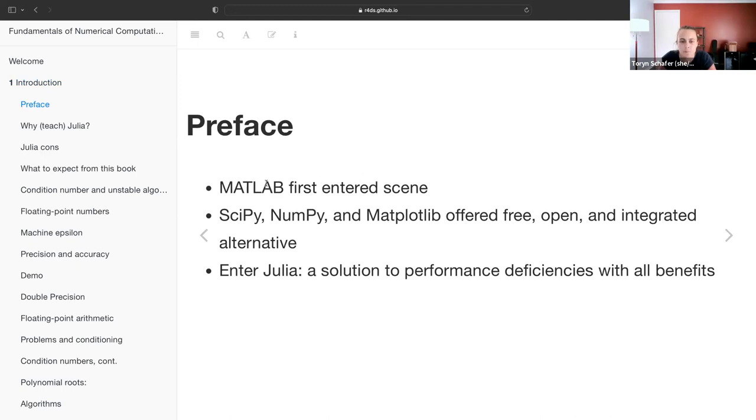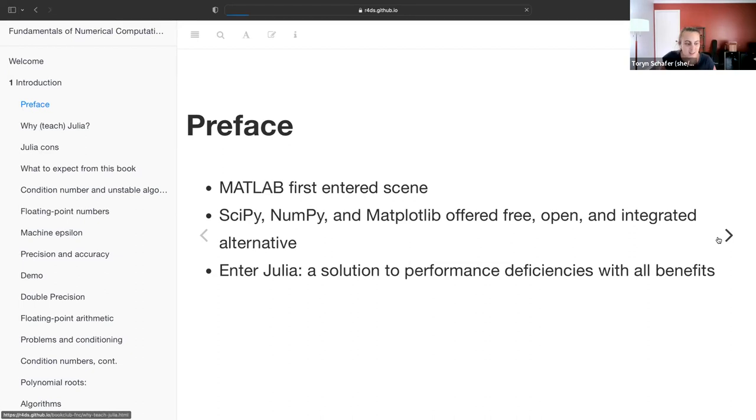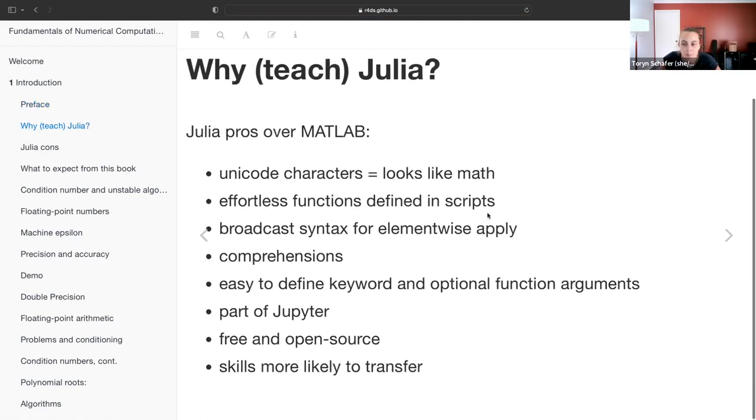From the preface, they gave a history of numerical computation. They said MATLAB was the first software on the scene. And then came SciPy, NumPy, and Matplotlib, which offered a free, open, and integrated alternative to MATLAB. And now this newcomer Julia, which they described as a solution to the performance deficiency seen in MATLAB and Python. But it can also have all of the benefits of these two since they're learning from those two software's mistakes.